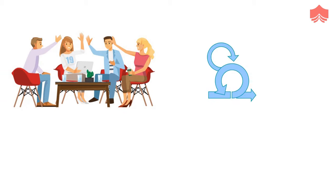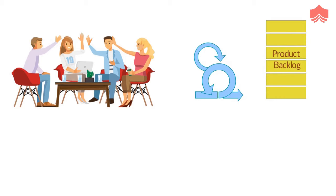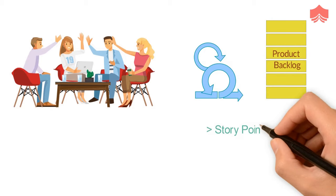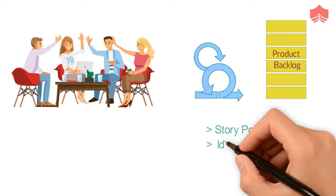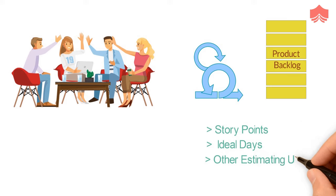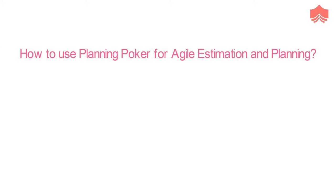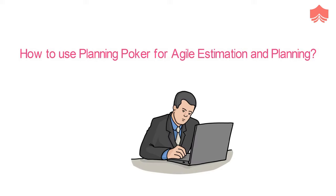Planning poker is a consensus-based estimation technique. In agile, it is used to estimate the product backlog. Story points, ideal days, or any other estimating unit can be used with planning poker. So how do you use planning poker for agile estimation and planning?